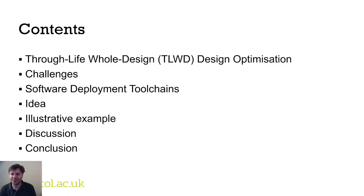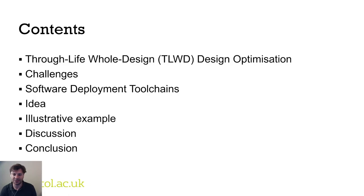In this presentation I will discuss what we mean by through-life whole-design design optimization and the challenges in achieving it. I will then provide an overview of some software development toolchains and present our idea of how these could be used to overcome the challenges. I will then present an illustrative example and proof of concept of the design optimization that uses software deployment tools, followed by a discussion of opportunities, next steps, and the conclusion.